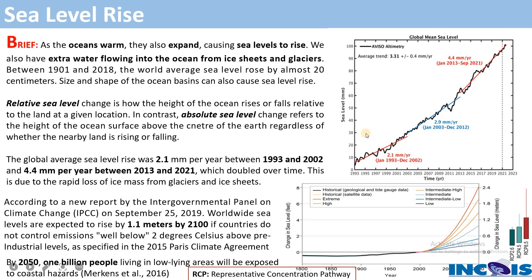Looking at statistics on global mean sea level rise: from 1993 to December 2002, the rise was 2.1 mm per year. From 2003 to 2012, it was 2.9 mm per year. From 2013 to 2021, it is 4.4 mm per year. Comparing the first period to the last, the rate has nearly doubled — from 2.1 to 4.4 mm per year — showing how rapidly sea level has been rising.